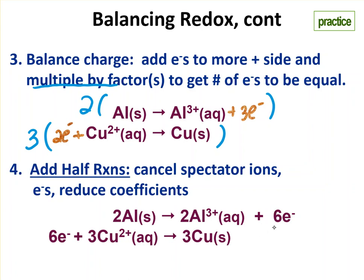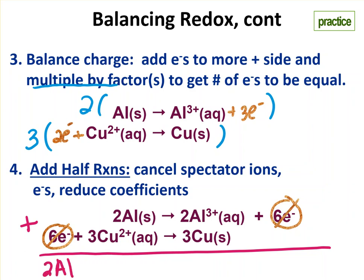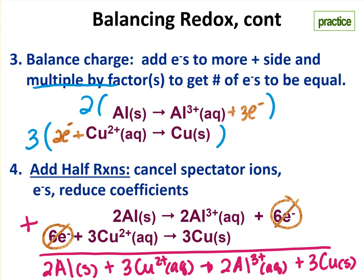And I have them written down here that way are balanced like we came up with up there. So the next step is to add the half reactions. So I'm going to add these like they're algebraic equations. And when I do anything that has the same amount on both sides will cancel. So these electrons now cancel. One's a product and one's a reactant. So they kind of cancel out. And I need to write what's left. So what's left is the two aluminum, and I'm going to add this one.